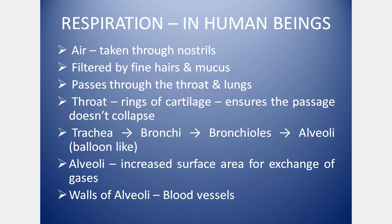Next is respiration in human beings. Air enters through the nose and nostrils. The hair and mucus in the nose filter dust from the air. The air then passes through the throat and lungs via the trachea, or windpipe. The trachea is made of soft, flexible cartilage so the passage does not collapse. The trachea branches into bronchi, then bronchioles, and finally alveoli. The alveoli are balloon-like structures with a large surface area for gas exchange.